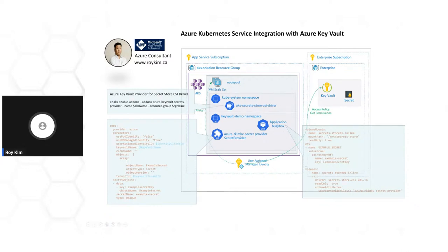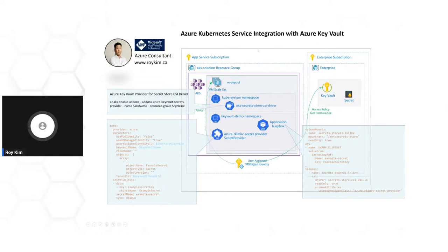In the Kubernetes pod itself, you create a volume mount, establish a mount path, and reference the secret provider class. This allows you to actually mount that secret as a file volume into the mount path. You can also create an environment variable taken from the Kubernetes secret, which is synced from the Key Vault secret. These are the main ingredients to get everything working.